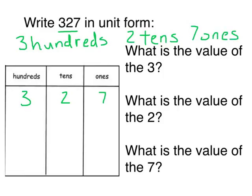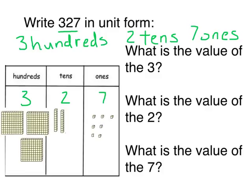I can represent my number now using base ten blocks to help me find the value of each digit. Seven in the ones place means that there are seven ones in my number. Two in the tens place means that there are two tens in my number. And three in the hundreds place means that there are three hundreds in my number. So, I have three hundreds, two tens, and seven ones.